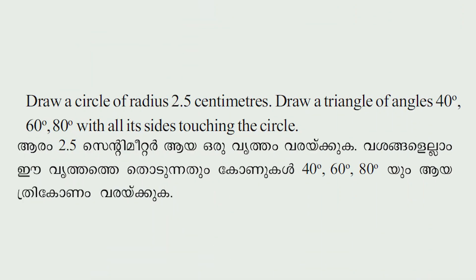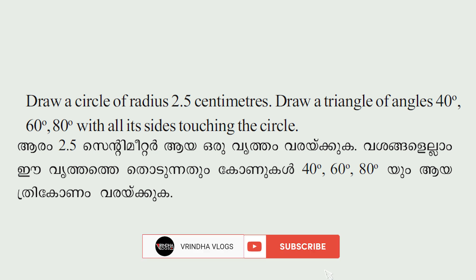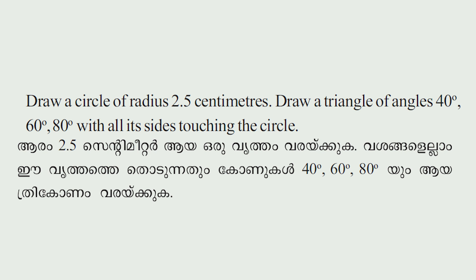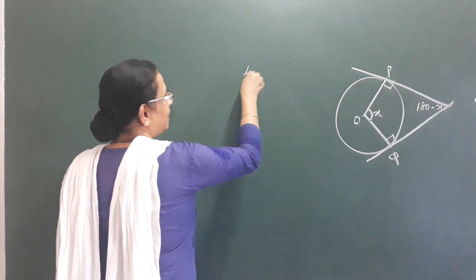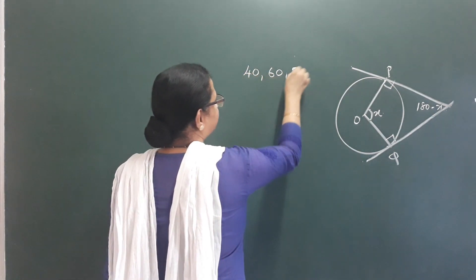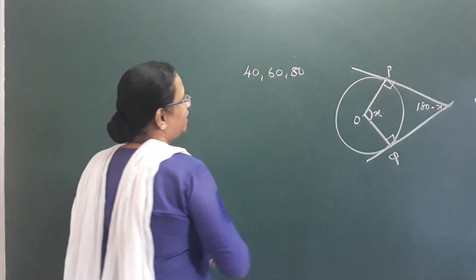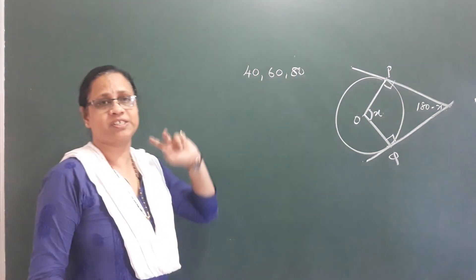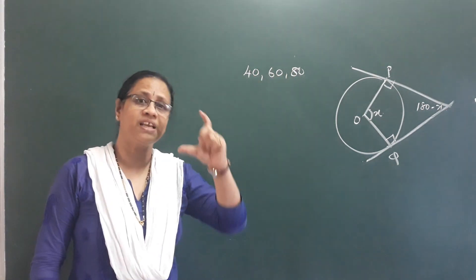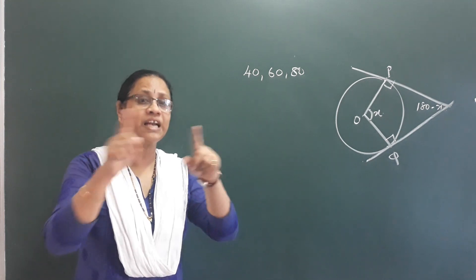Draw a circle of radius 2.5 cm. Draw a triangle of angles 40, 60, 80 degrees with all its sides touching the circle. We call it a triangle with angles 40, 60, 80 degrees with all its sides. We have to draw a triangle to the circle.